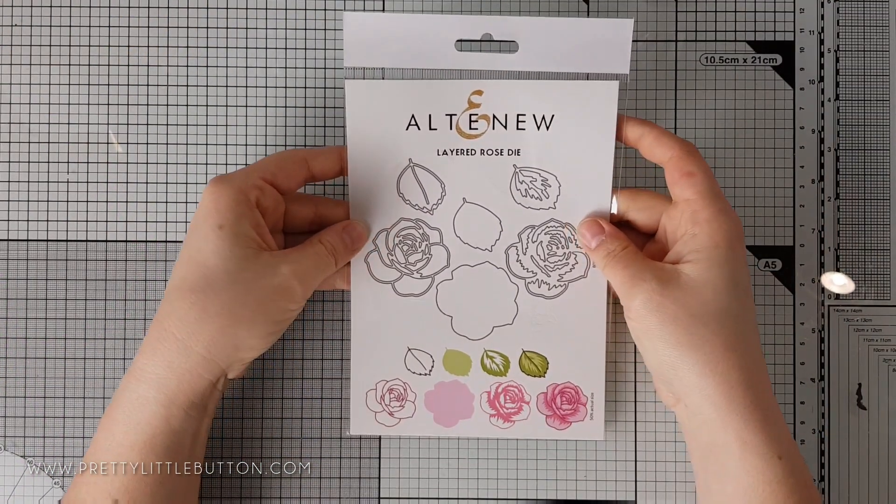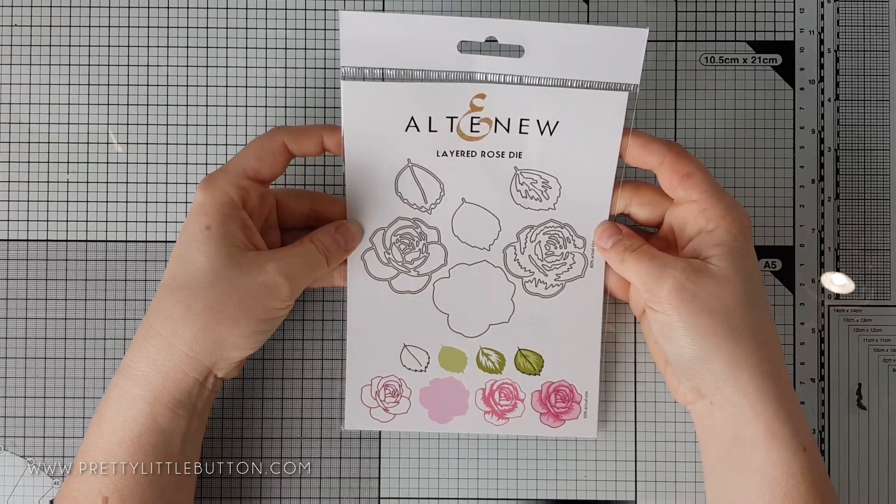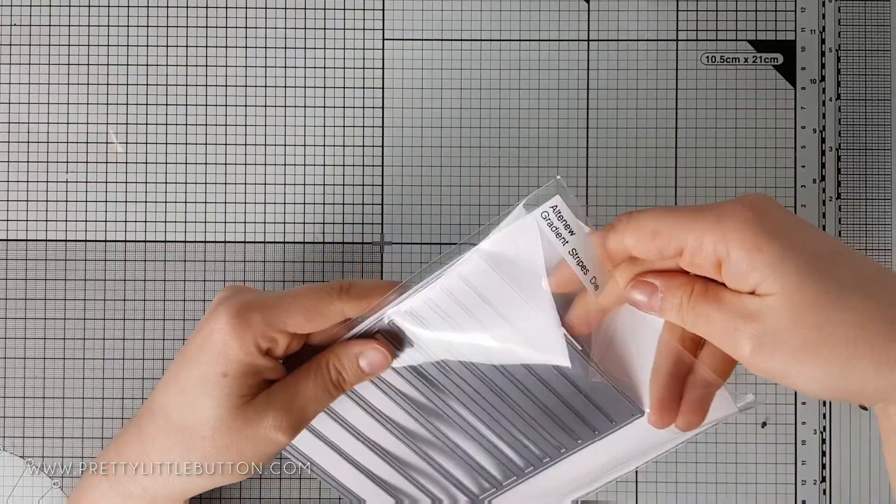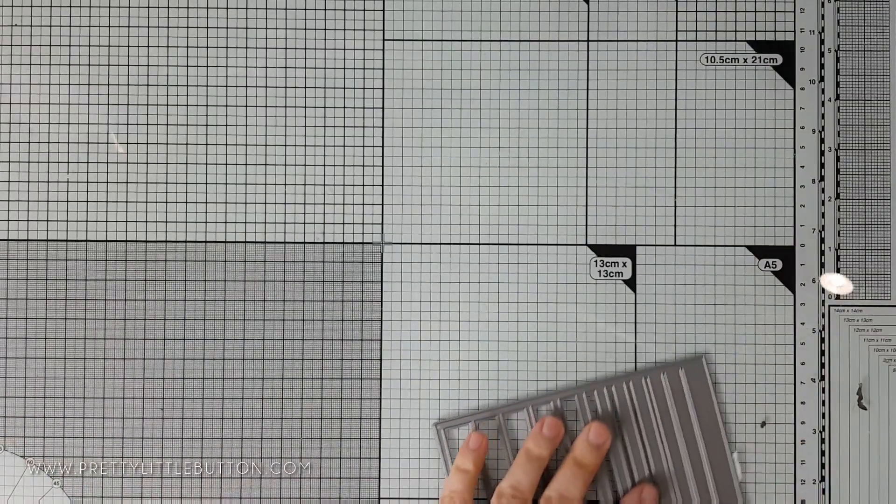The Altenew layered rose die comes with three floral layers and three leaf layers which you can layer up to have a bold colored outline or only use two layers for a more freestyle look.